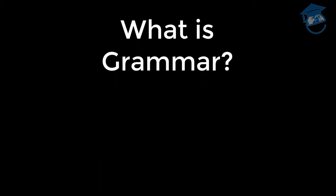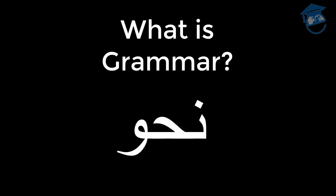What is grammar? Nahu is the Arabic word for grammar. Grammar, in general, is the set of structural rules governing the composition of sentences, phrases, clauses, and words in any given natural language — grammar is the glue that holds a language together. Arabic is a Semitic language based on a trilateral root system. The Arabic grammar is very different from the Indo-European grammar found in languages like English, French, or Spanish, and therefore requires a good deal of focus and attention.